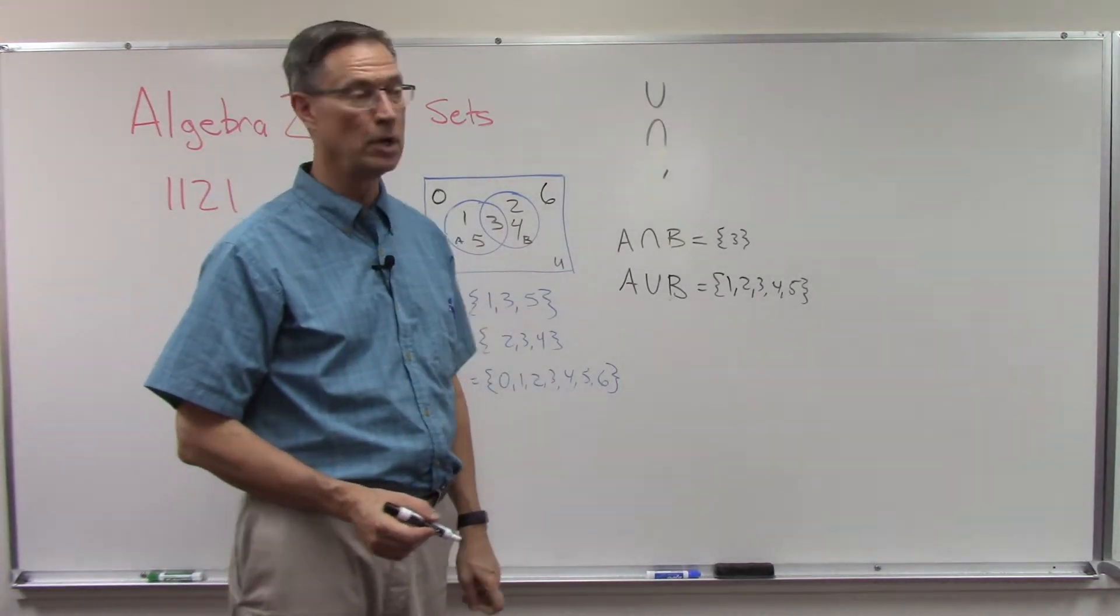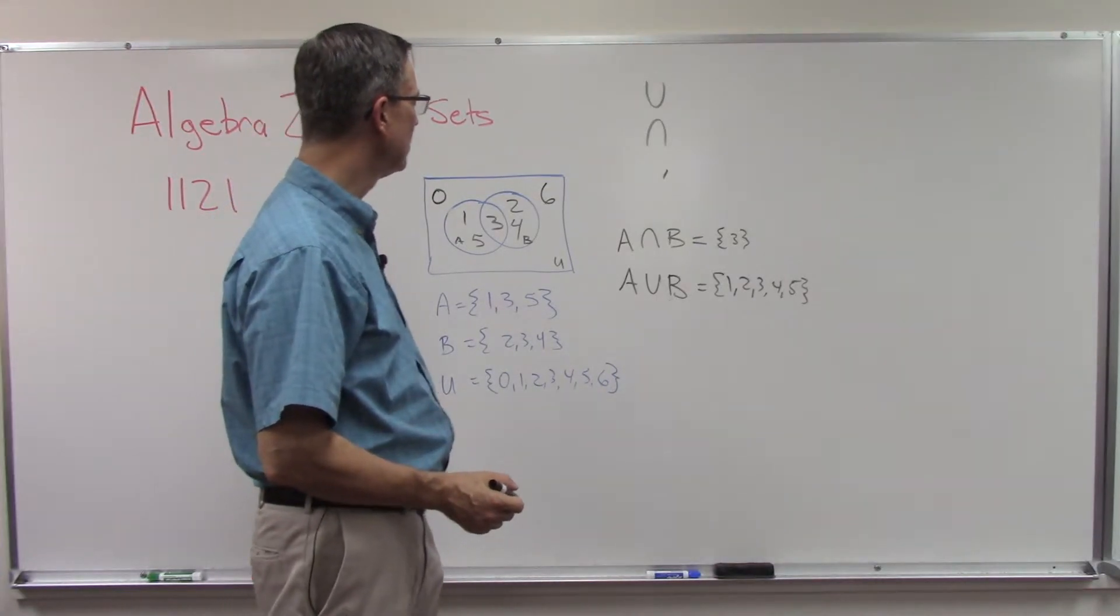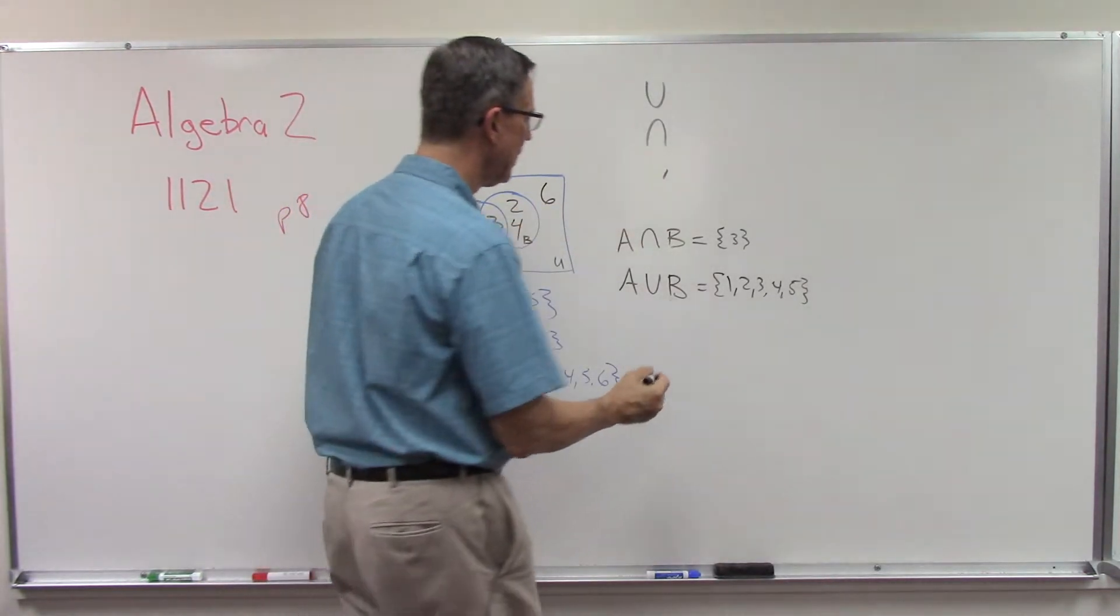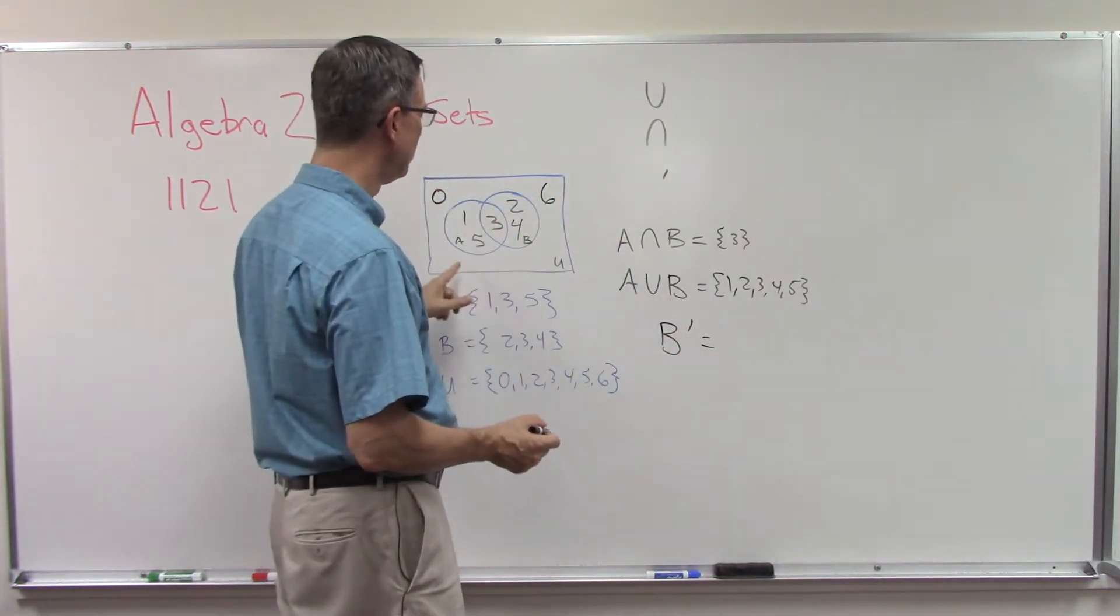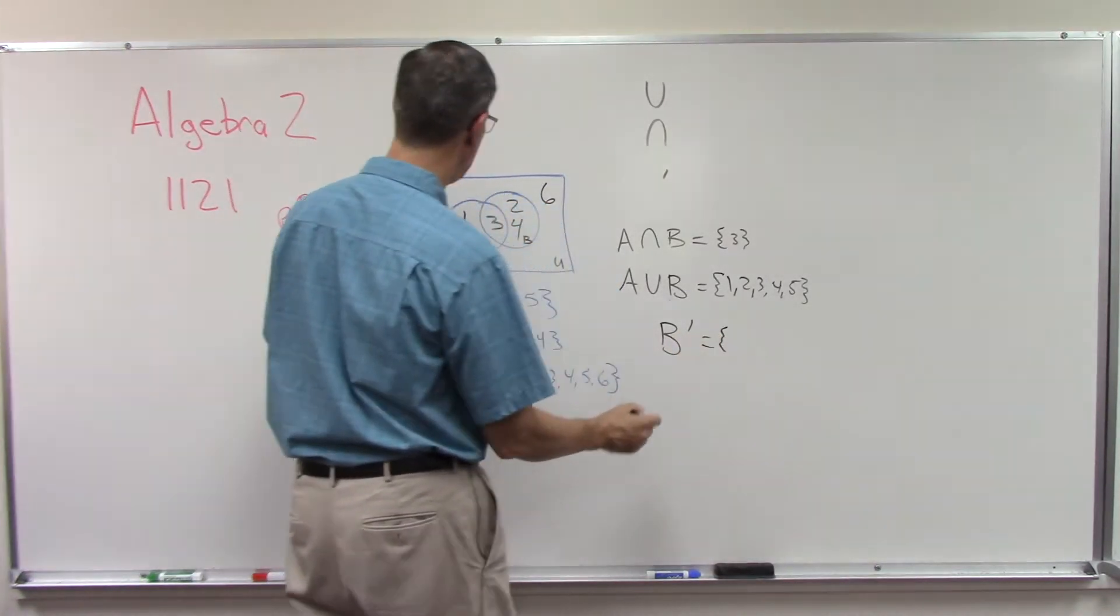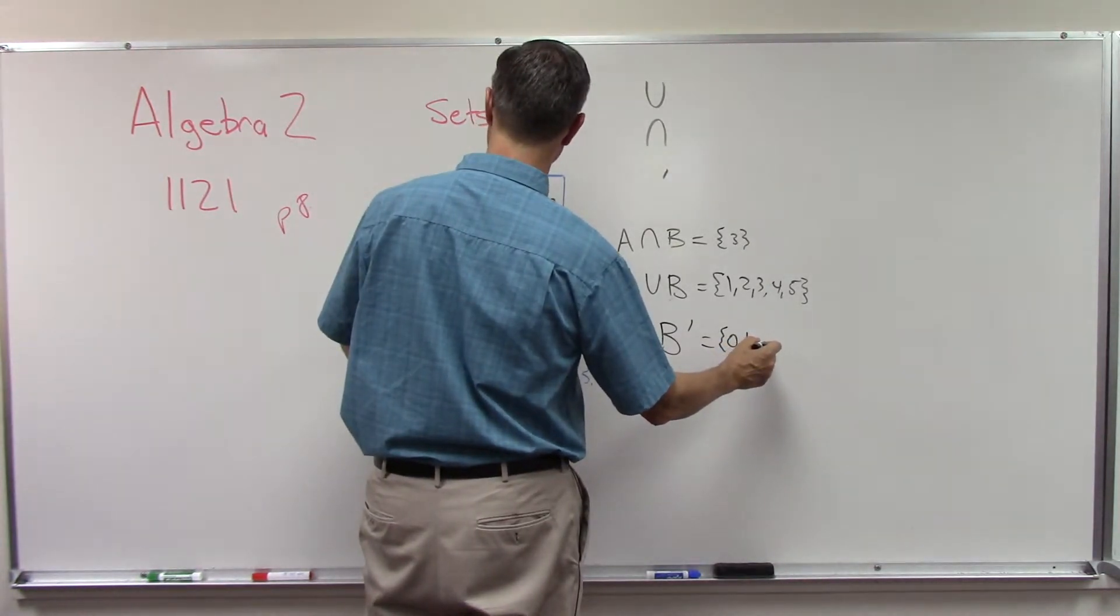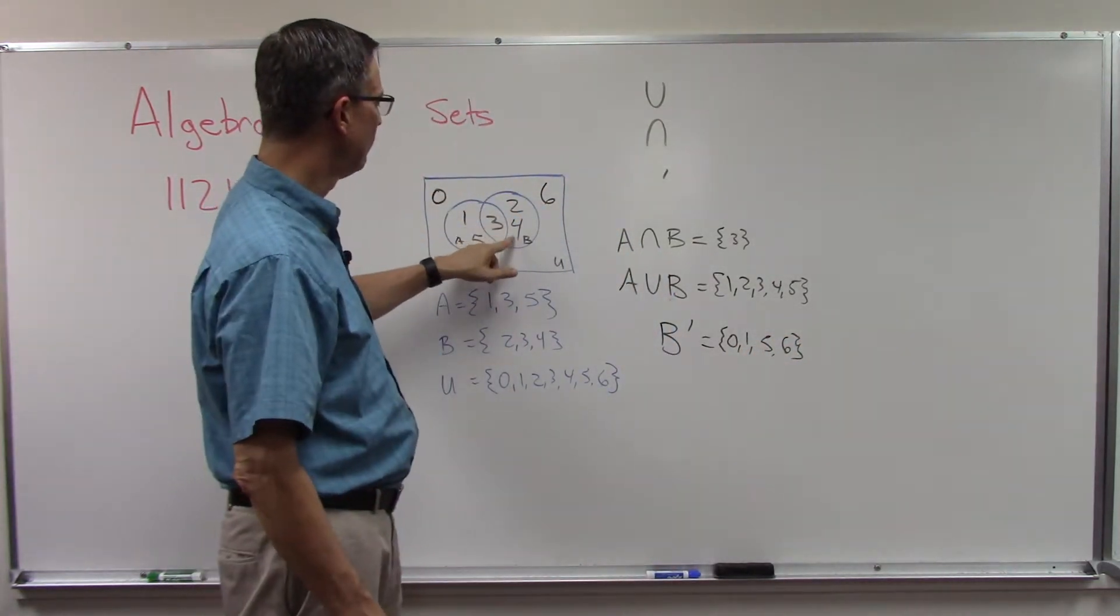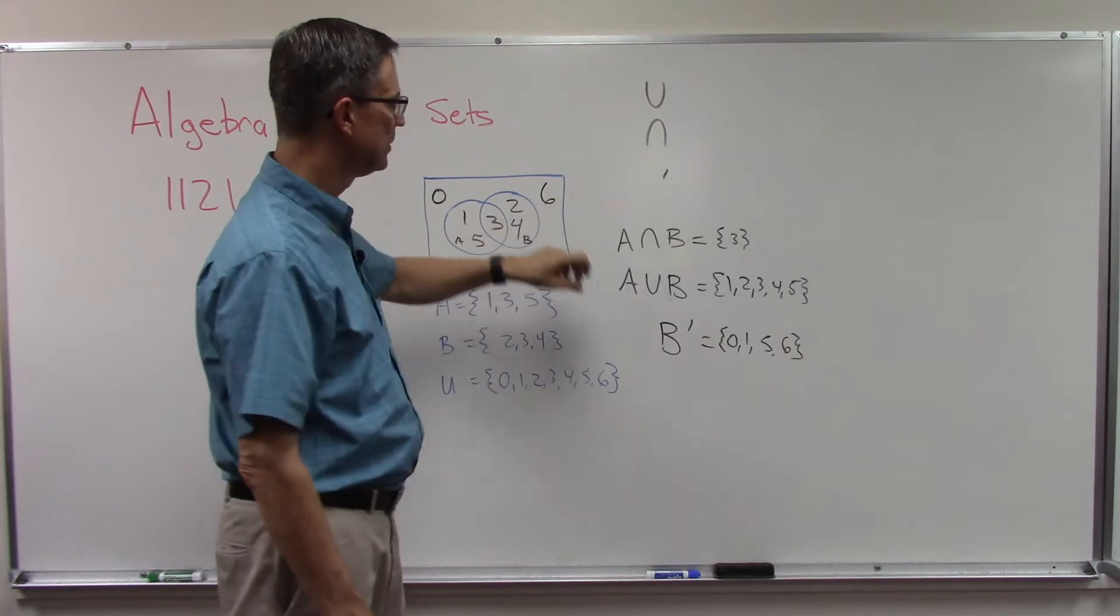So there's another symbol then and that is called prime. This looks like a little apostrophe and we can put that next to one set like B prime means everything in this universal set that's not in B. So let's see, we would have zero one and then two three four five and six. So two three and four are not included but zero and one and five and six are in B prime.